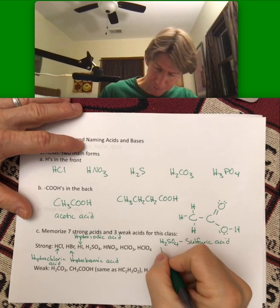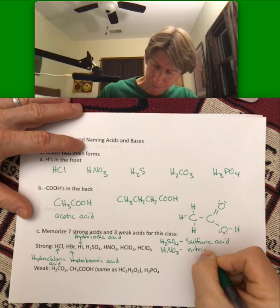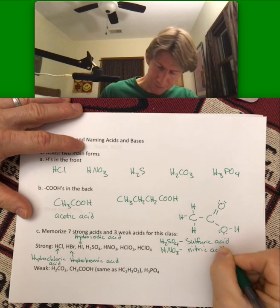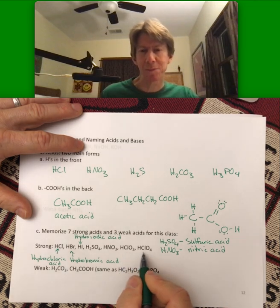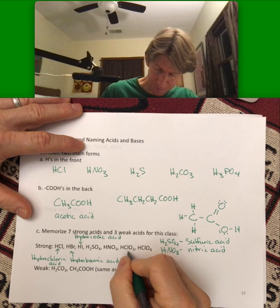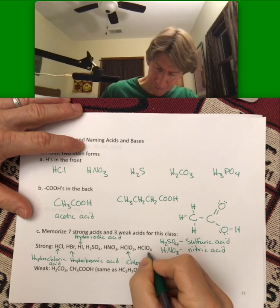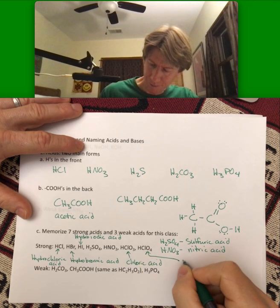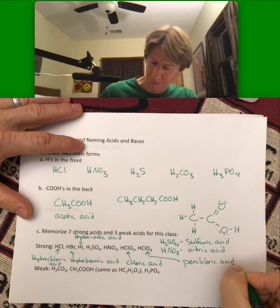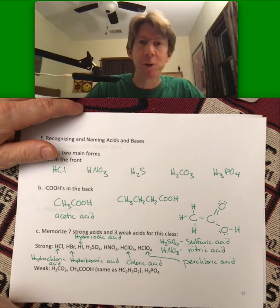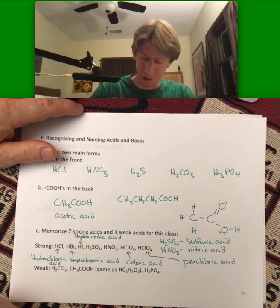Sulfuric acid, nitric acid, chloric and perchloric acid. Those are your seven strong acids. We're going to talk about them a lot later and all through general chemistry.